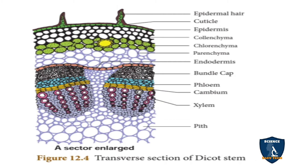This is the enlarged portion. The epidermis is made up of a single layer of parenchyma cells. Its function is protection, same as in the root. It has stomata, which control transpiration and gaseous exchange. It also has a cuticle — made up of cutin — which protects the epidermis. Epidermal hairs are also present, and they are multicellular.